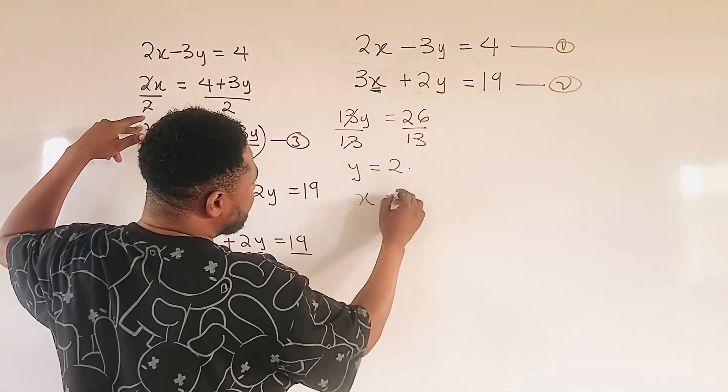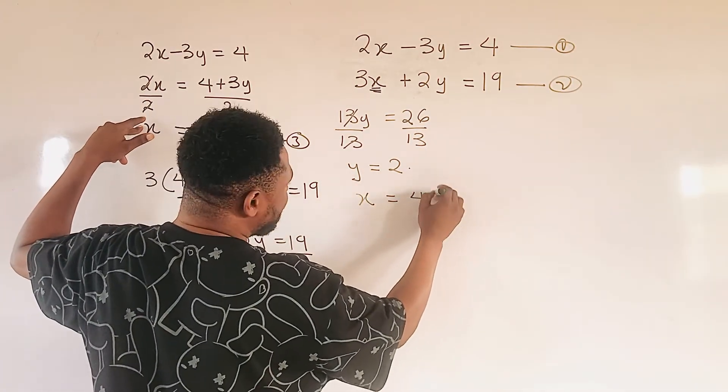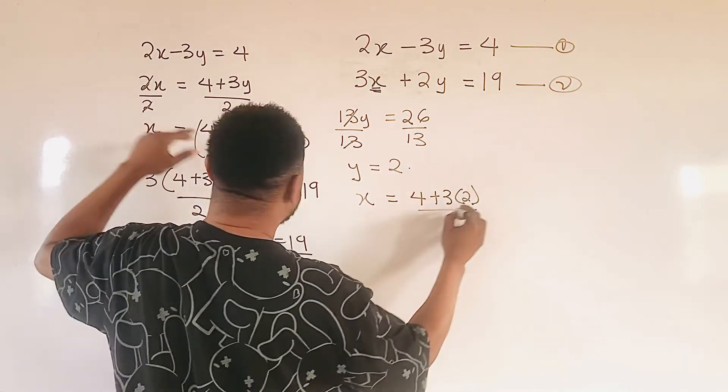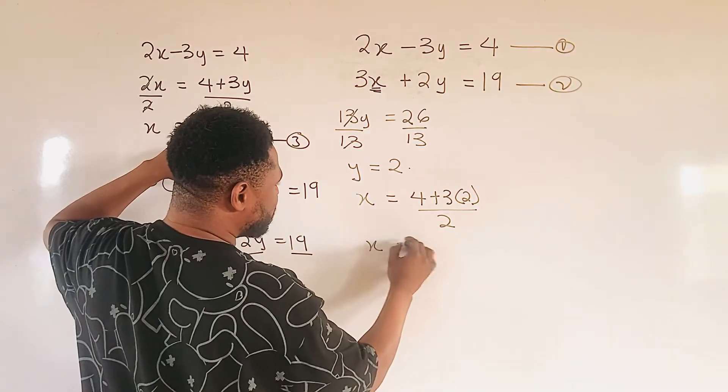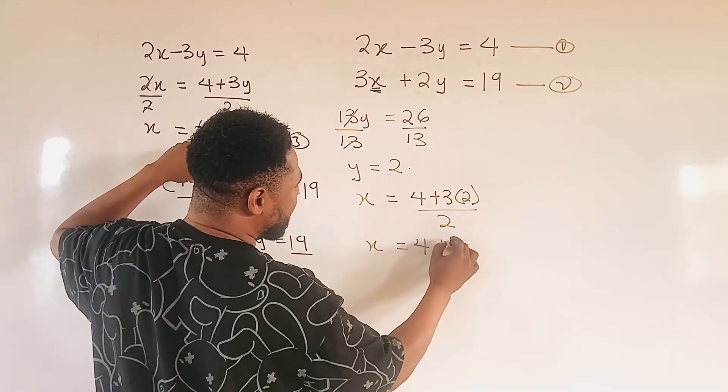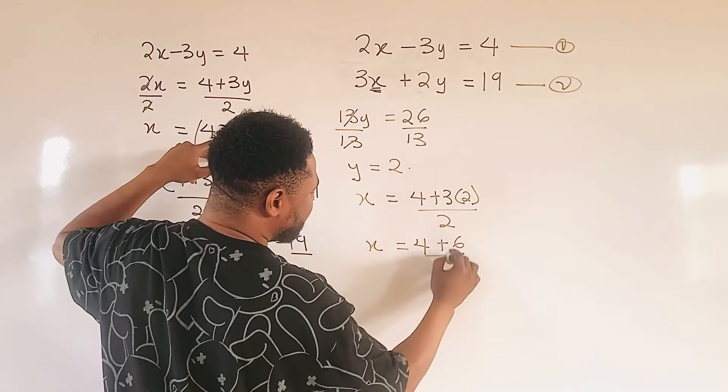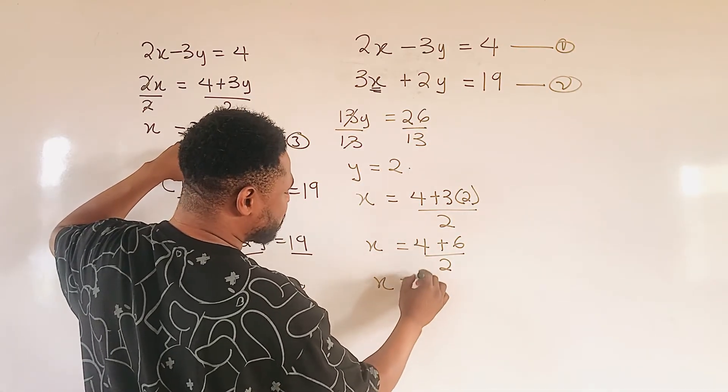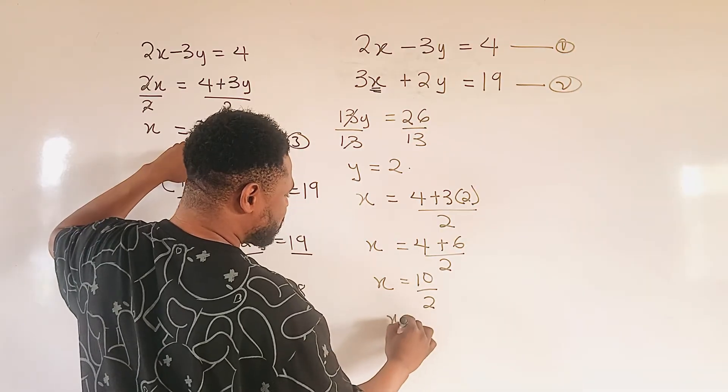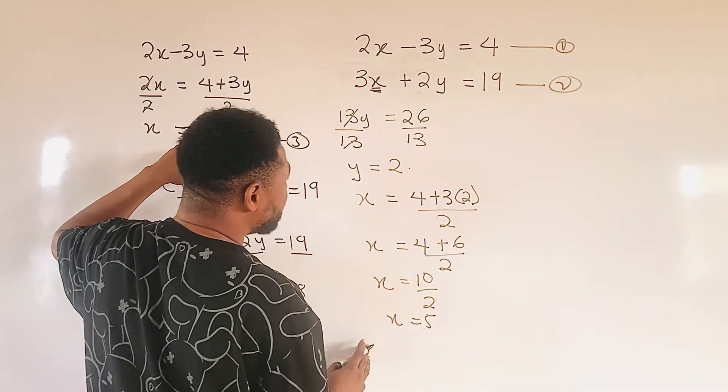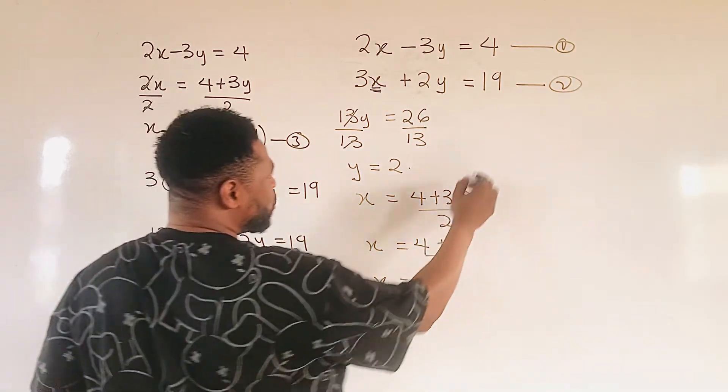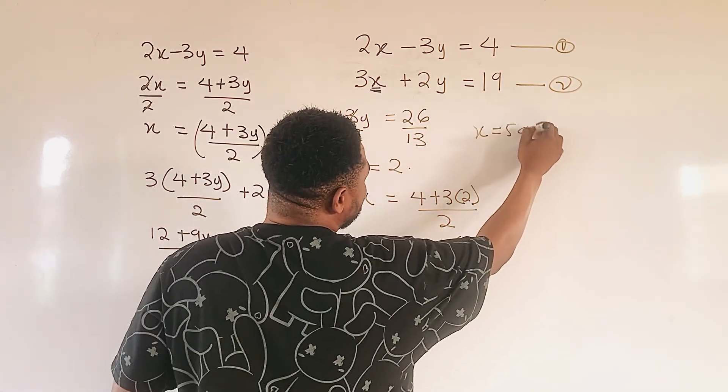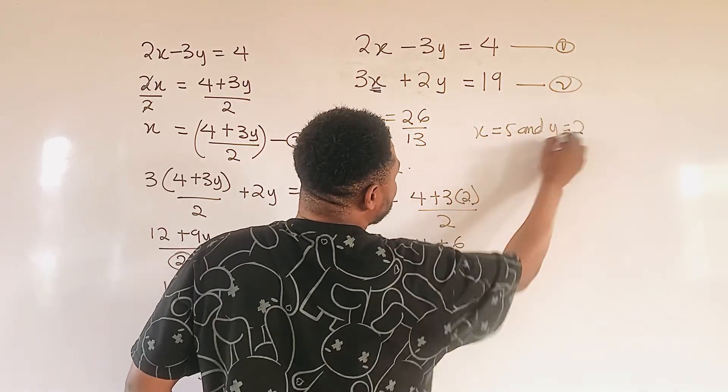So we have x equal to 4 here, plus 3 multiplying our 2, all divided by 2. So x will be equal to 4 plus 6, divided by 2. Nicely. So 4 plus 6 will give us 10, all divided by 2. So our x is going to be 5. So we can conclude by saying that x is equal to 5, and y is equal to 2.